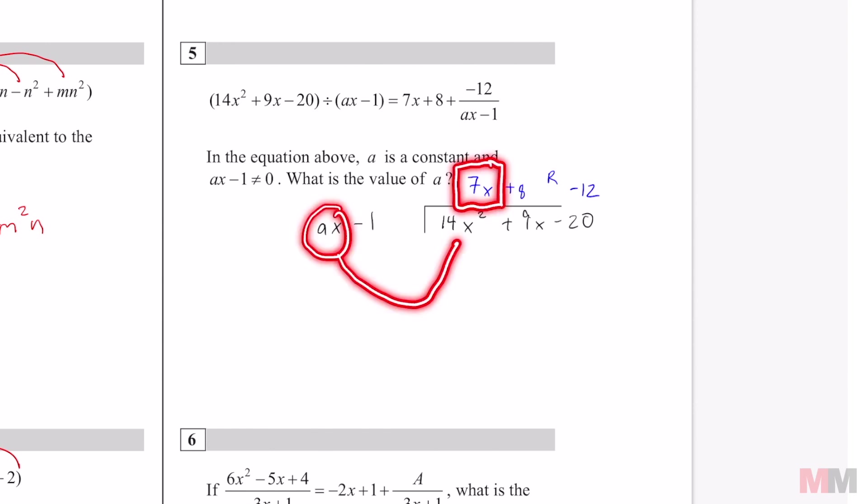So what divided by 14 will get me 7x. From here you can tell the value of a has to be 2 because 14x squared divided by 2x is 7x. So for this question you don't have to do the full problem if you know how long division works. The answer is 2.